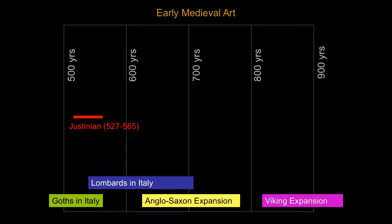The Vikings actually go quite late. The end of the Viking era is usually described as 1066, when William the Conqueror comes over from Normandy and conquers the Anglo-Saxons. The descendants of William the Conqueror have been ruling England ever since. The Queen of England is like the 29th-generation great-grandchild of William the Conqueror. But we're going to go back in time to the 6th century.